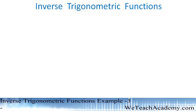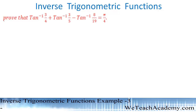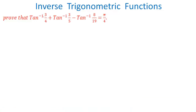Hello, in this video we are going to discuss an example under the concept of inverse trigonometric functions. The given example is: prove that tan inverse 3/4 plus tan inverse 3/5 minus tan inverse 8/19 is equal to pi by 4. Note that this is inverse, not tan to the power minus 1.